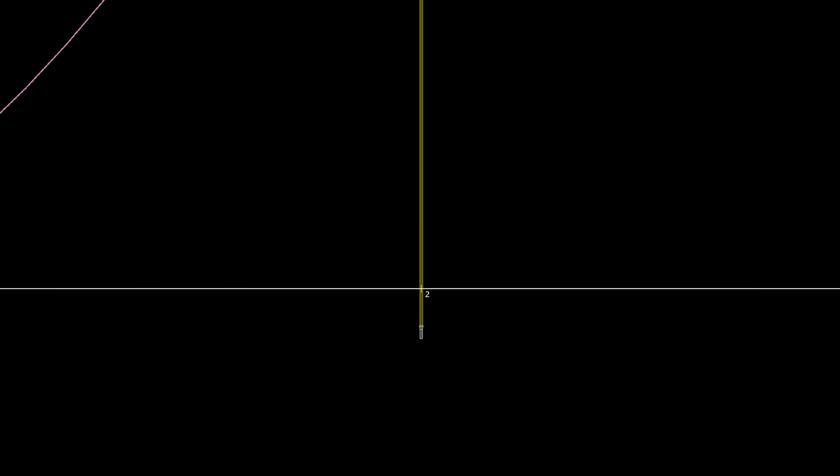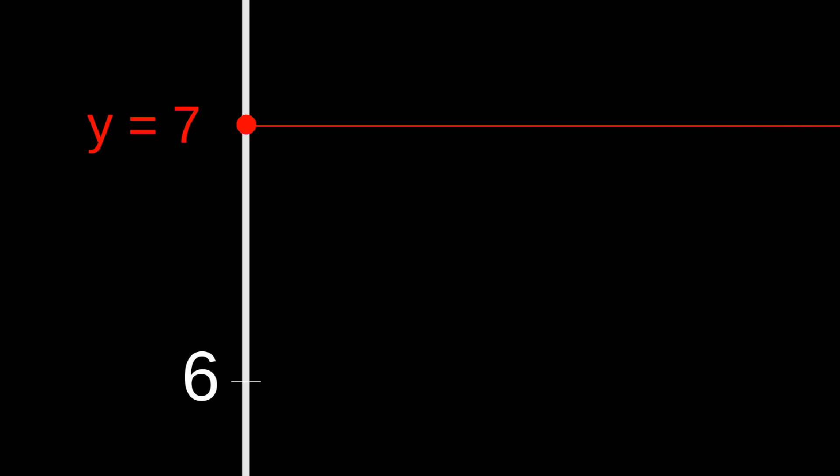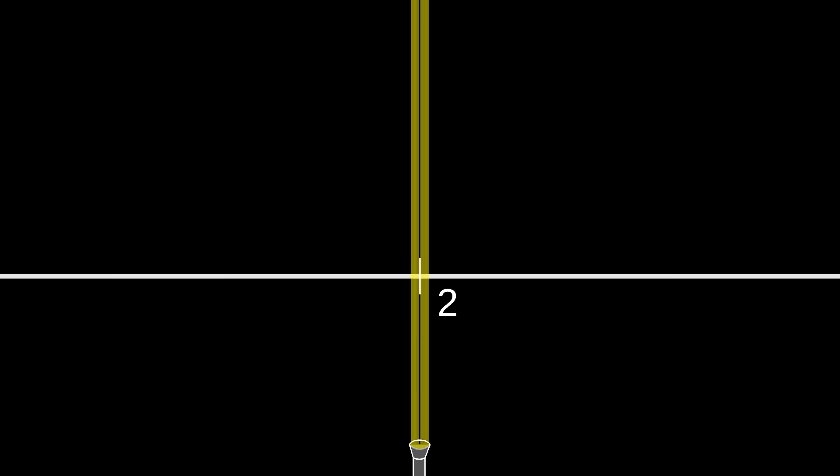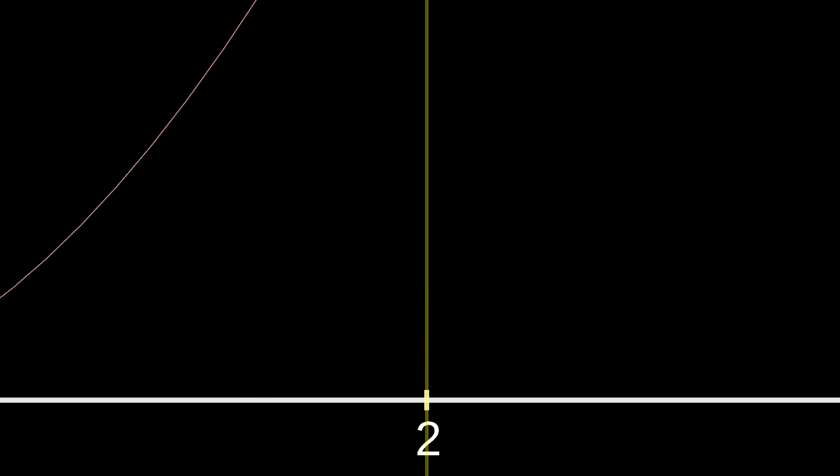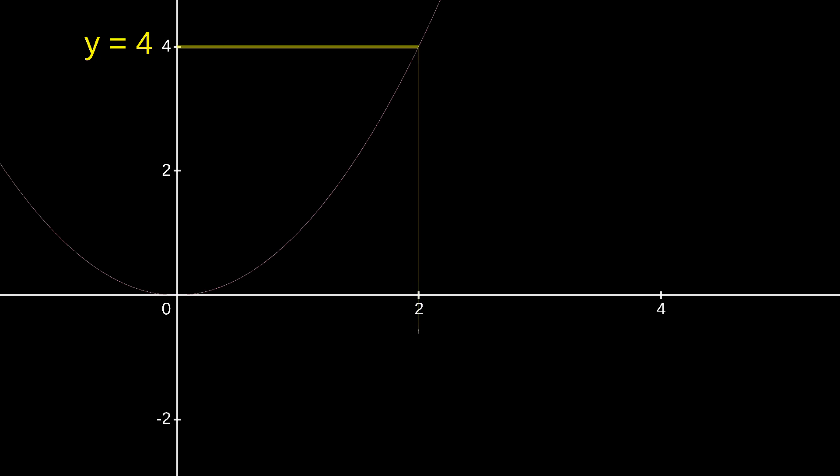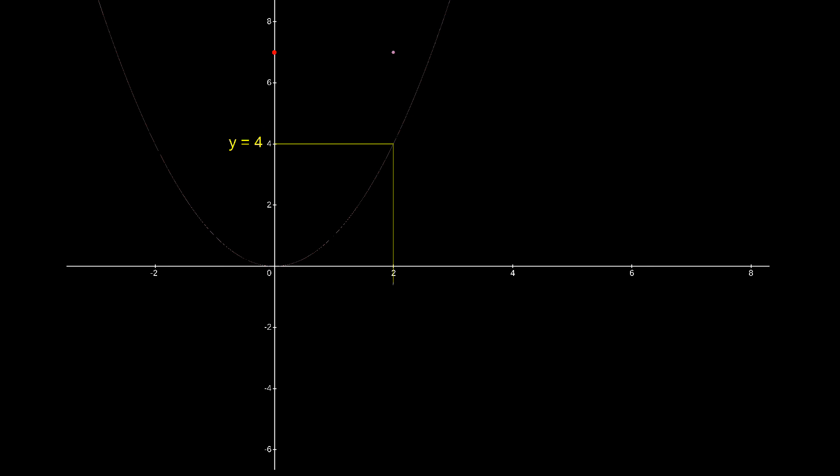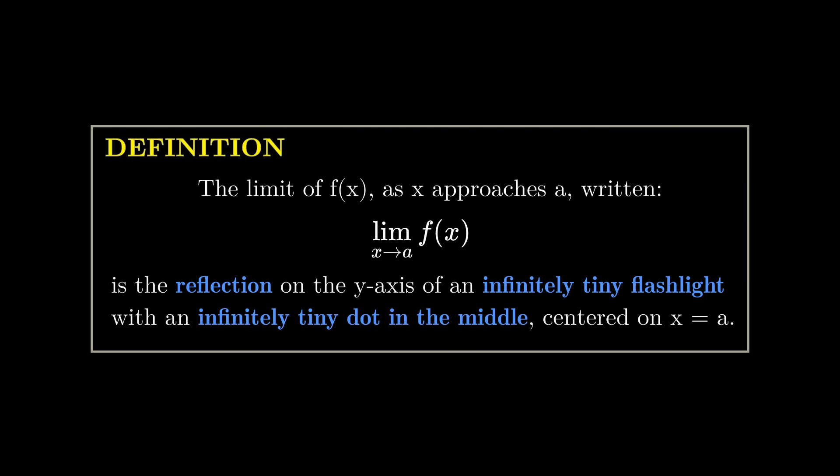Notice that although this is an infinitely tight beam, it's still different from the laser pointer. The laser pointer saw the value of the function at 2 directly, and so because of that single point discontinuity, it reflected an output of 7. But the flashlight, by virtue of the tiny little dot we stuck in the middle, never sees the value of x equals 2 directly, no matter how tiny it gets. It just sees a tighter and tighter beam around the input of 2, reflecting an output of 4. And this is the core of what a limit is. It's the reflection of an infinitely tiny flashlight with a tiny little dot in the middle.